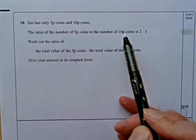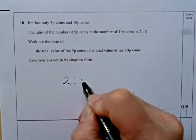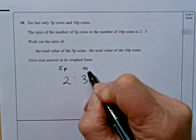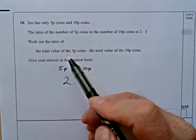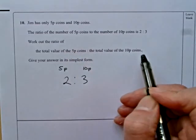The ratio of the number of 5p coins to 10p coins is 2 to 3. So we'll write that down, 2 to 3. We'll put 5p and 10p above it. We've got to work out the ratio of the total value of the 5p coins to the total value of the 10p coins.